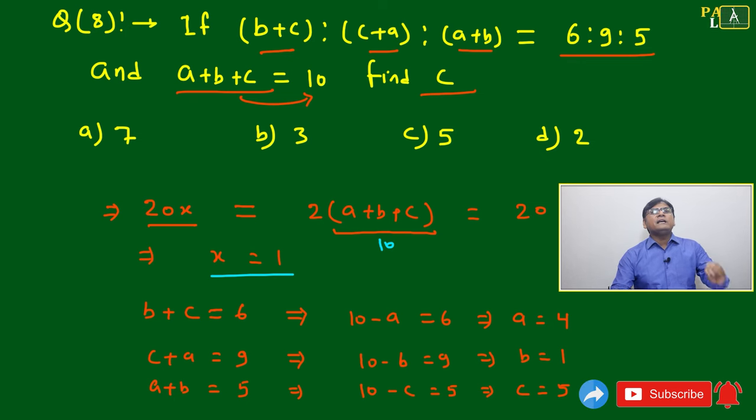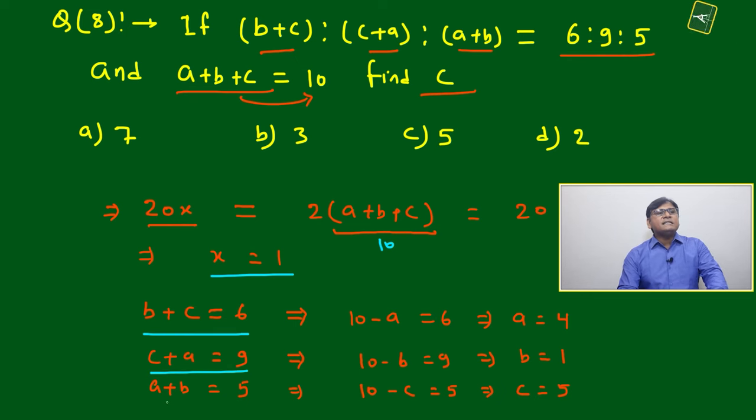This means the ratio will be in basic form 6:9:5, correct? Because x is 1, we can directly write b+c equal to 6, c+a equal to 9, a+b equal to 5.